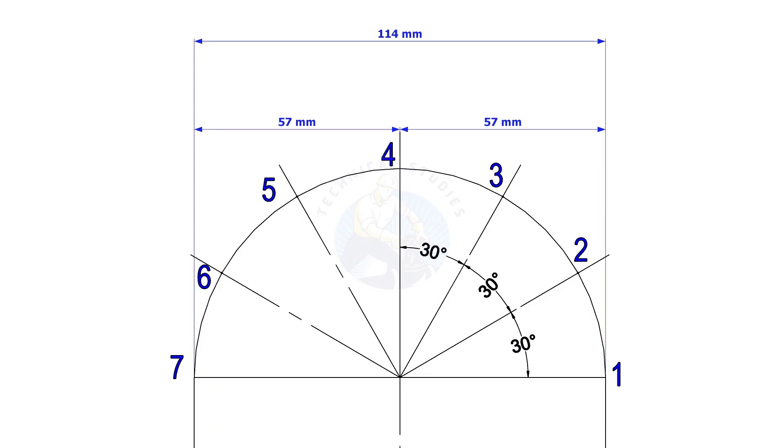Divide this half circle into 6 equal segments. If the pipes are above 6 inches, you may need to increase the segments for better accuracy.